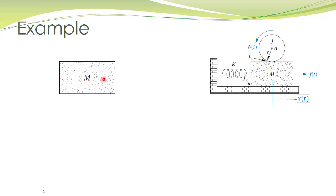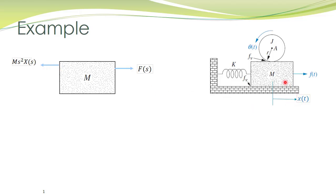In the free body diagram we have the mass. An external force f(t), written in the Laplace domain as F(S), is applied to this mass. There is also a force due to the inertia of this mass. That force is always opposite to the direction of acceleration. Here x(t) is the linear displacement of this mass, and the second derivative of this displacement is the acceleration, represented as M·S²·X(S) in the Laplace domain.